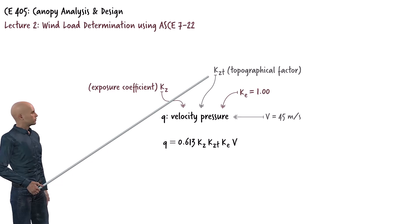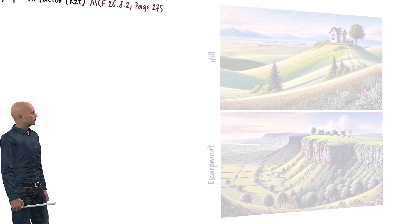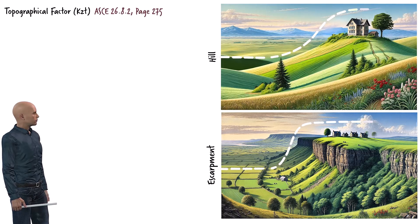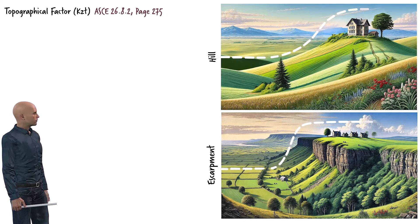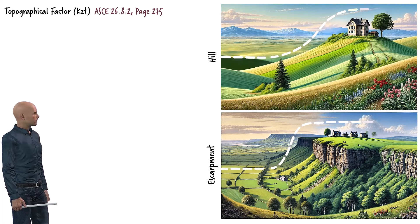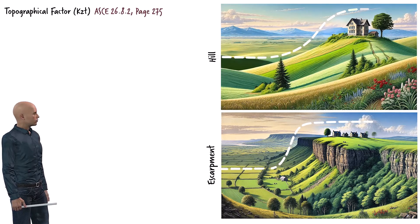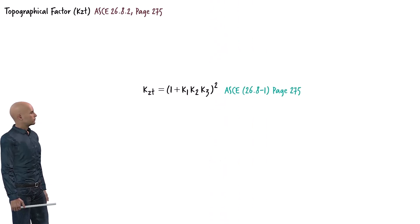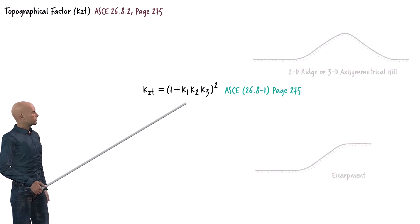Next, let's take a closer look at what the topographical factor is all about. As wind moves across the landscape, it flows steadily over flat terrain. But when it hits hills, ridges, or steep drops like escarpments, the wind speeds up. This speed-up creates stronger wind pressure, especially in the upper half of a hill or ridge, or near the top of an escarpment. We use the topographical factor KZT, which adjusts wind pressure calculations to reflect these unique conditions shaped by the terrain. KZT is given by an equation that is a function of three key parameters: K1, K2, and K3.